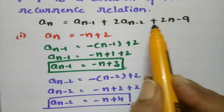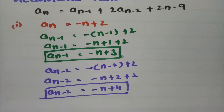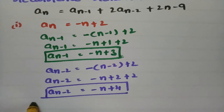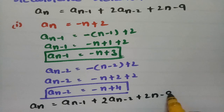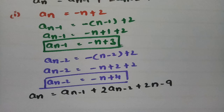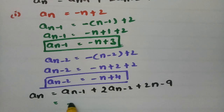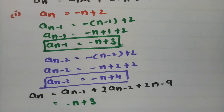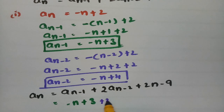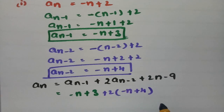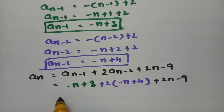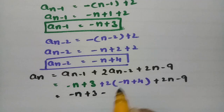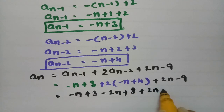Now we check whether An is a solution. The recurrence relation is An = An-1 + 2·An-2 + 2n - 9. Substituting: An-1 = -n + 3, and 2 times An-2 = 2(-n + 4) = -2n + 8, plus 2n - 9.